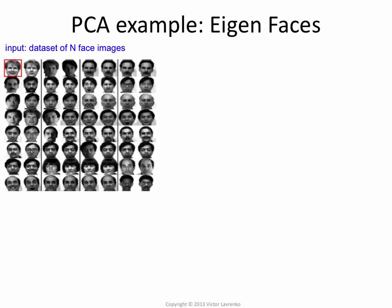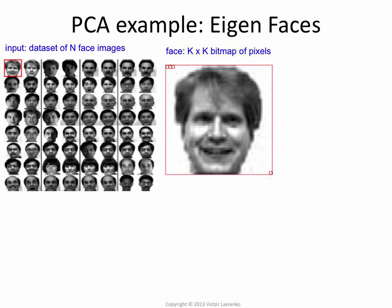Eigenfaces is doing PCA on bitmap images of human faces. You have a data set where every bitmap is a data instance. We're assuming it's a k-by-k bitmap — it doesn't have to be square, k-by-k just makes it easy to explain. It's grayscale, so each pixel is just a number between 0 and 255, just the level of gray.